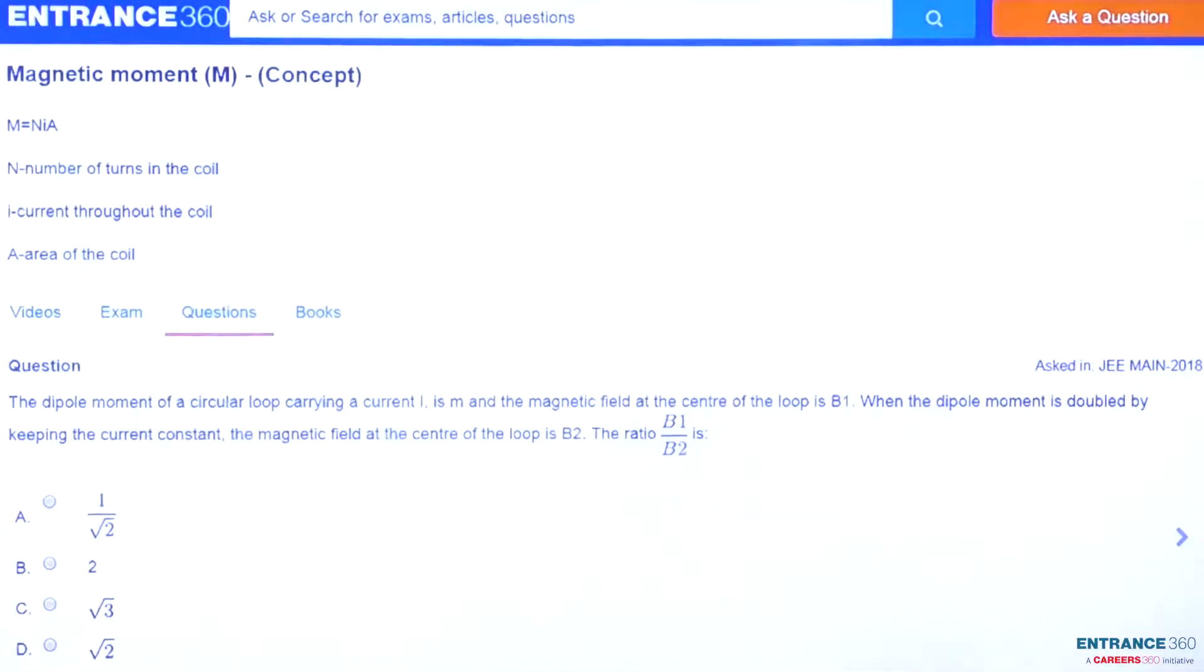Hi everyone, let's discuss a question from the chapter magnetism. The dipole moment of a circular loop carrying current i is m, and the magnetic field at the center of the loop is b1. When the dipole moment is doubled by keeping the current constant, the magnetic field at the center of the loop is b2.